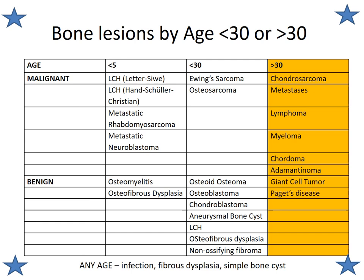When we think about this lesion by age categories — whether occurring in a patient less than 30 or greater than 30 — there are certain diseases for consideration. Primary bone sarcoma such as chondrosarcoma, or metastatic disease like metastases, lymphoma, and myeloma can be categorized together. Other considerations include chordoma, adamantinoma, giant cell tumor, and Paget's disease.